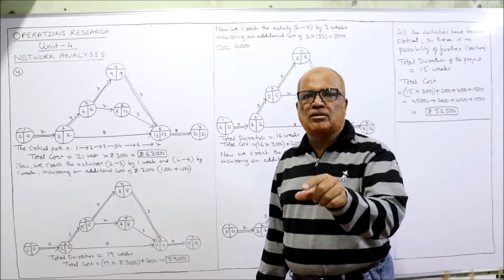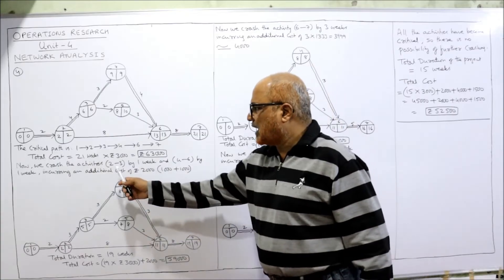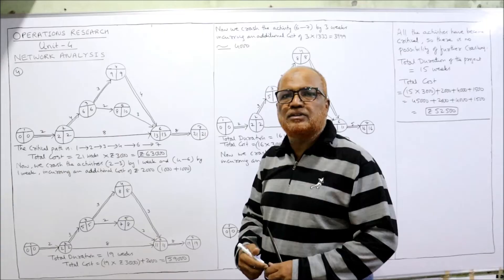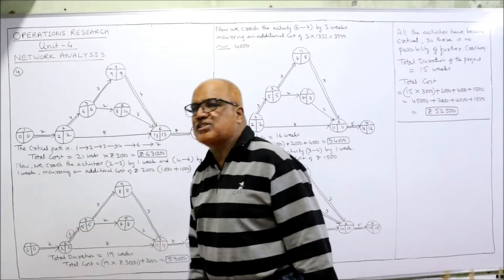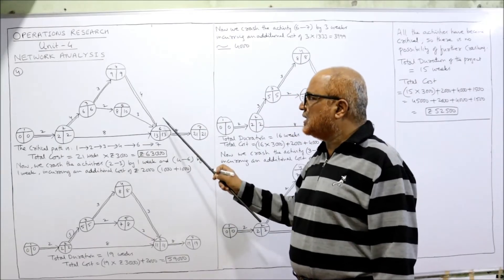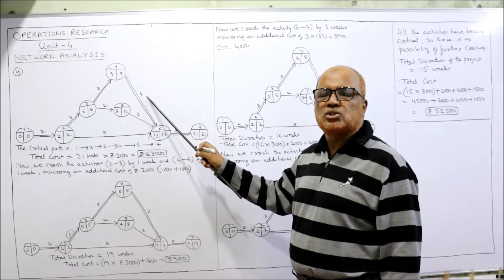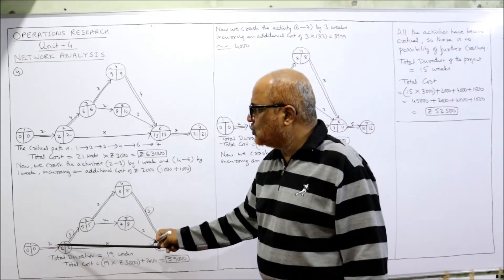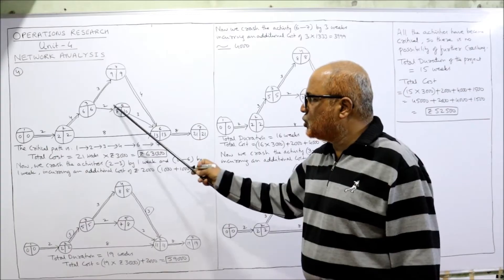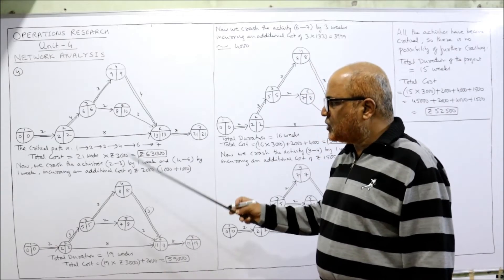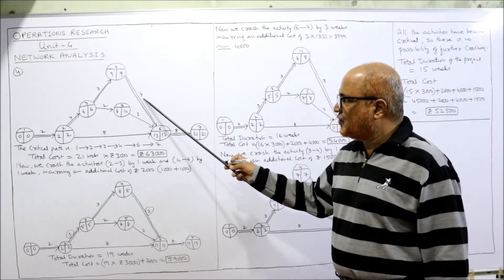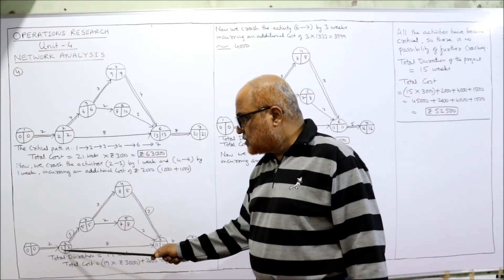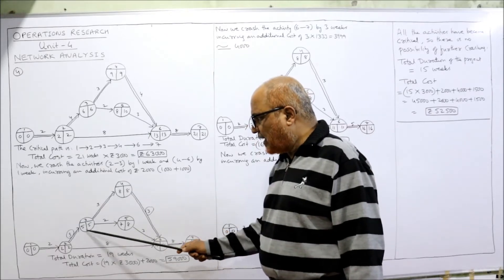Now update the diagram: activity 2→3 changes from 4 weeks to 3 weeks, and activity 4→6 changes from 4 weeks to 3 weeks. All other time estimates remain the same: 2, 8, 3, 2, 3, 8. Recalculate EST: 0+2=2, 2+3=5, 5+3=8, 5+2=7. At node 6, three arrows merge — take the maximum: 8+3=11, 7+3=10, 2+8=10 — highest is 11.